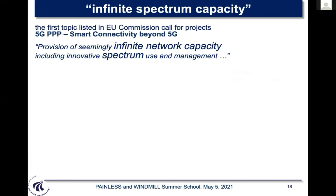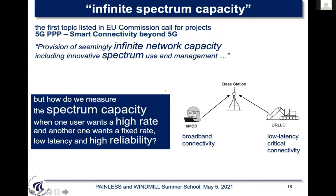What is spectrum slicing? The EU Commission's call for 6G projects listed as its first topic 'provision of seemingly infinite network capacity, including innovative spectrum user management.' Infinite network capacity is a marketing term, but it points to spectrum capacity — how much data spectrum can carry. Traditionally we speak about spectrum efficiency, maximizing bits sent over spectrum. But when one user wants high rate and another wants low latency and high reliability, how do we measure and optimize spectrum capacity for both?